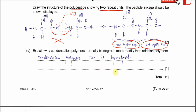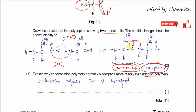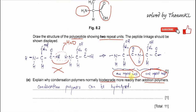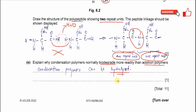Part E. Condensation polymers are normally biodegradable or can be degraded more readily than addition polymers because they contain amide bonds or ester bonds, which can be easily hydrolyzed. When these bonds are hydrolyzed, the polymer is readily degraded.